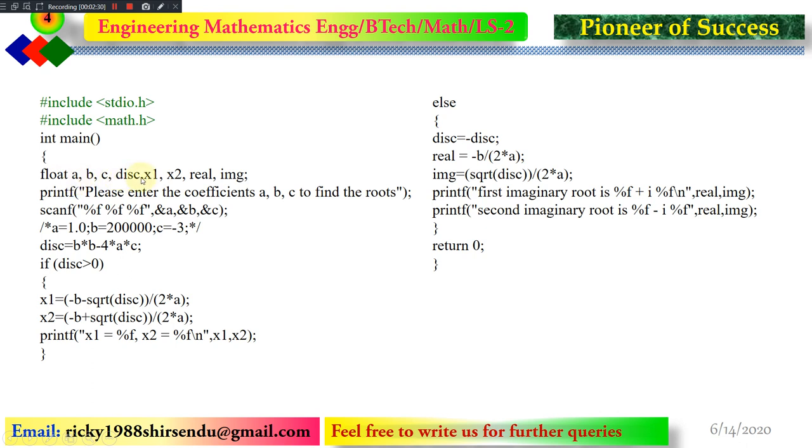In main code, we have taken floats. We have taken a, b, c, disc, x1, x2, real, img (imaginary). All those parameters will be required during the calculation, and that is why I have listed the parameters as float. Why did I take float? Because that can be a fraction, and that is why we have taken floats instead of integers.